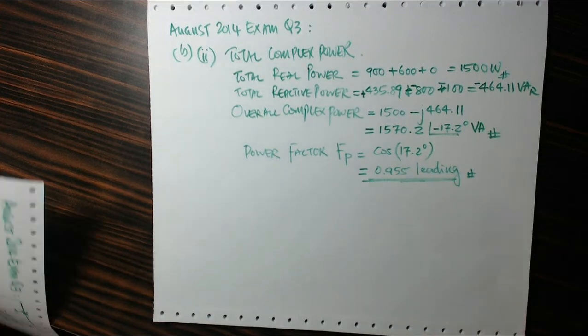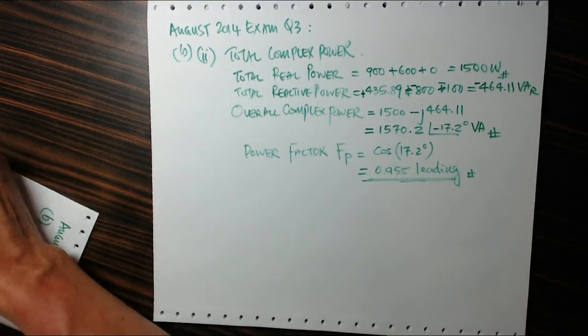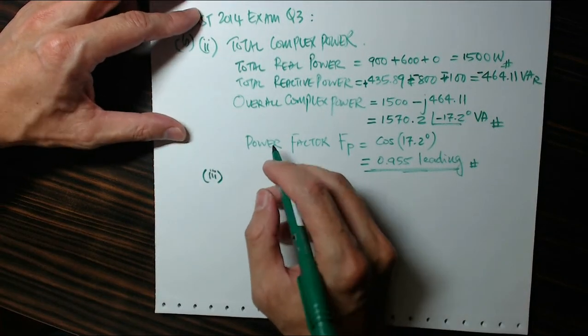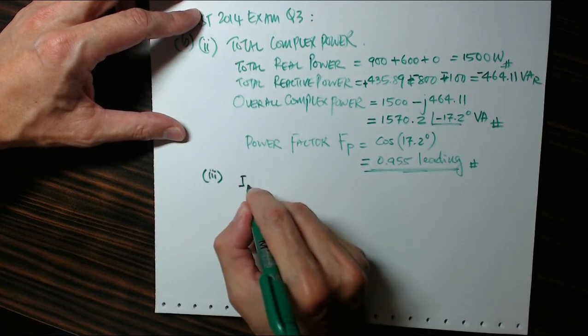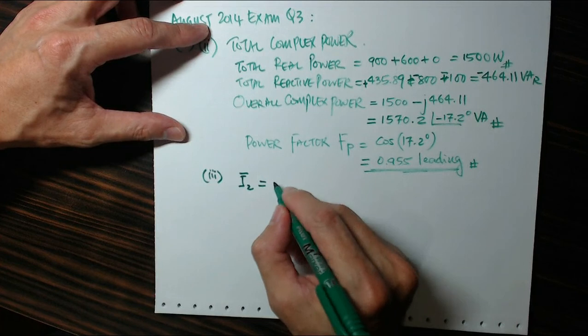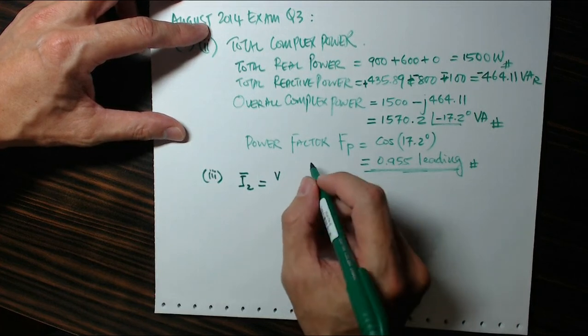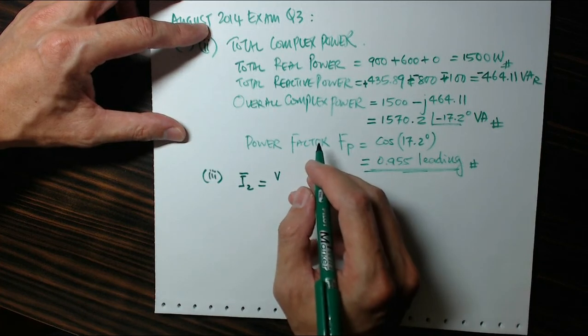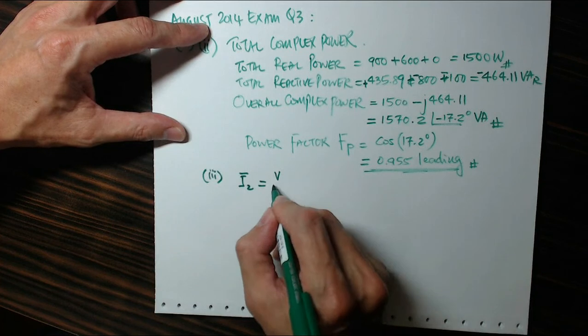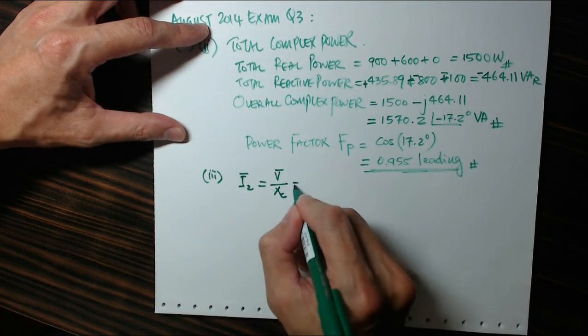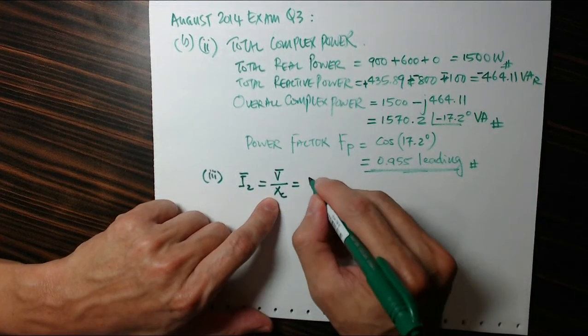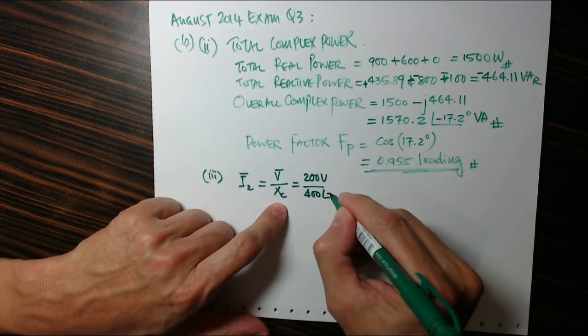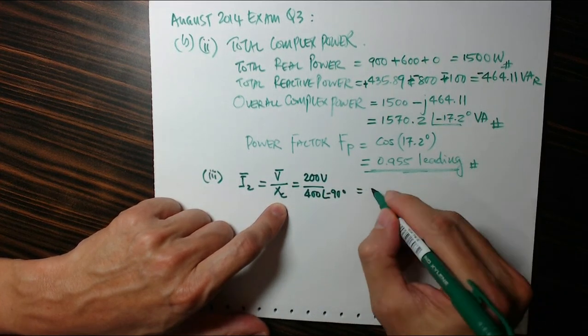Sorry, I should be writing the other way around, positive, negative. This is capacitive, this is inductive. So if I express this in polar form, that would be 1570.2 at the angle of minus 17.2 degrees VA. Right, therefore the overall power factor equals to cosine 17.2 degrees, 0.955 leading, because it's capacitive.